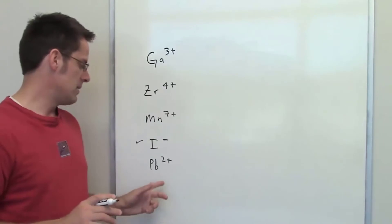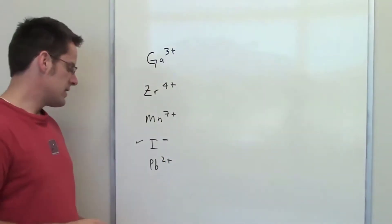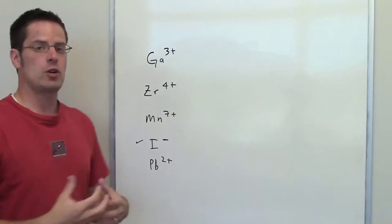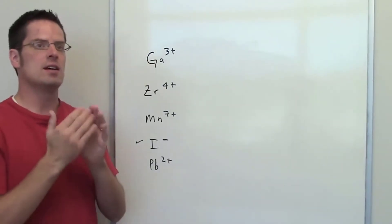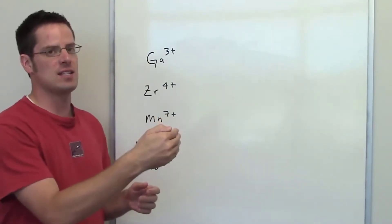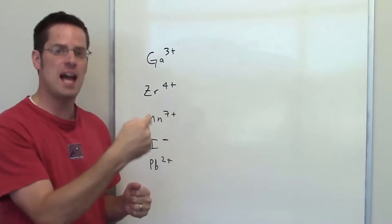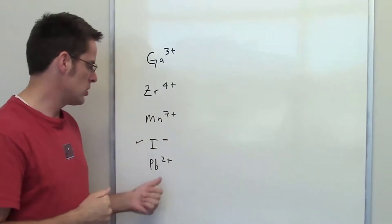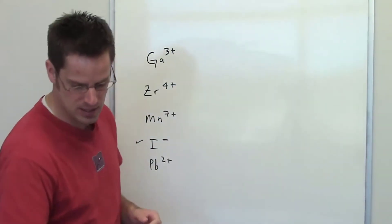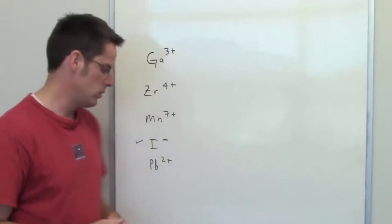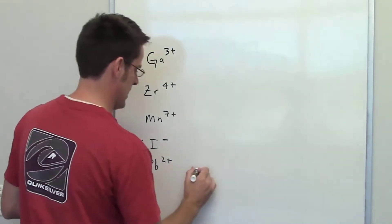Lead is element number 82 on the periodic table. Every time an element loses an electron to gain a positive charge, it electronically feels as if it's shifting one position to the left on the periodic table. So lead two plus feels as if it is element number 80, which is mercury. I'll go ahead and write these down.